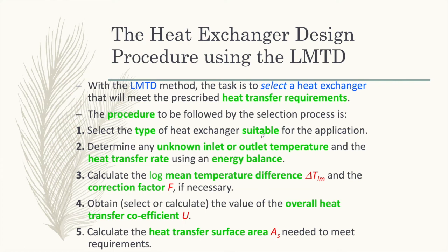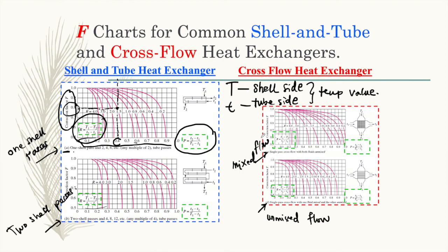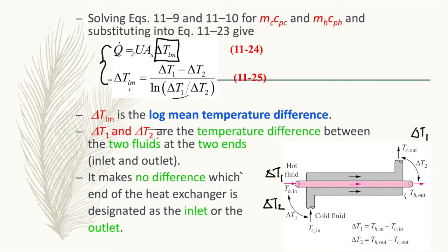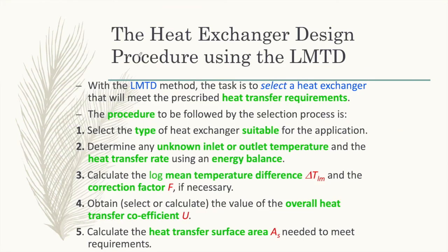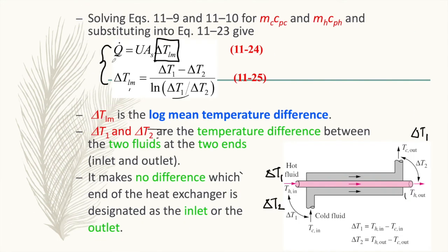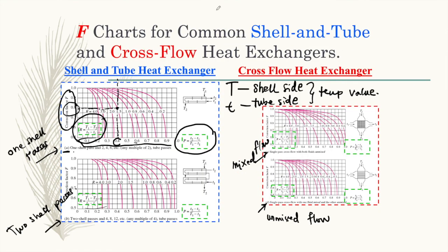Fourth, obtain the overall heat transfer coefficient U using a suitable method or equation. Fifth, calculate the heat transfer surface area A_s. Finally, substitute all values into the equation Q-dot equals U·A_s·F·delta_T_lm to determine the rate of heat transfer. Remember that for shell-and-tube or cross flow heat exchangers, you must include the correction factor F obtained from the chart.